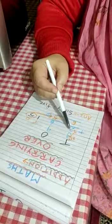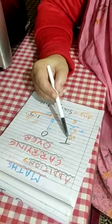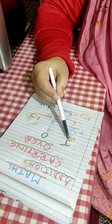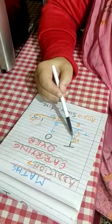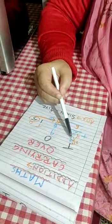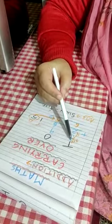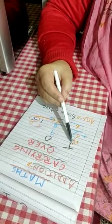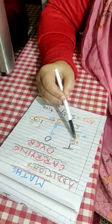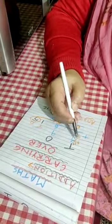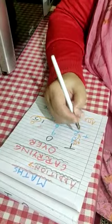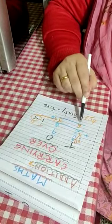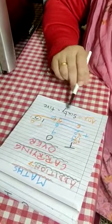Now we have to add three numbers here. We have the 1, the 3, and the 2. So first we will add the 1 and the 3. Which is the bigger number? 3. Put 3 in your mind, take out one finger, count after 3 — after 3 comes 4. Now put 4 in your mind and take out two fingers. 4 plus 2 gives you 6. So your answer is 65.